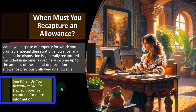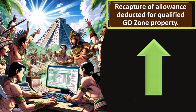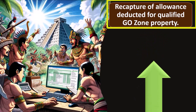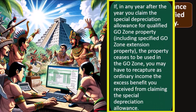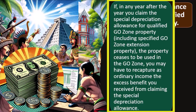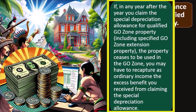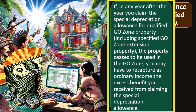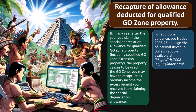When do you recapture MACRS depreciation? See Chapter 4 for more information. Recapture of allowance deduction for qualified Go Zone property: if in any year after the year you claim the special depreciation allowance for qualified Go Zone property, including specified Go Zone extension property, the property ceases to be used in the Go Zone, you may have to recapture as ordinary income the excess benefit you receive from claiming the special depreciation allowance. This is somewhat of an unusual situation, although it could come up again. This is another area where you have this complication that happens because of the special Go Zone rules in place.